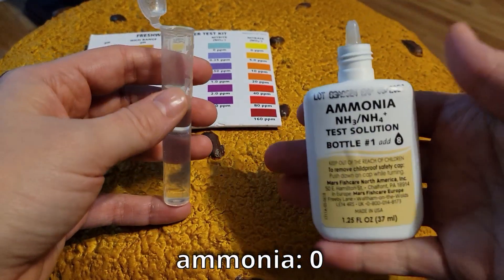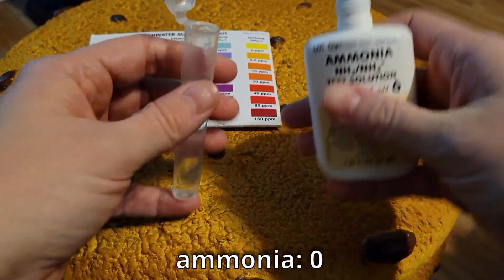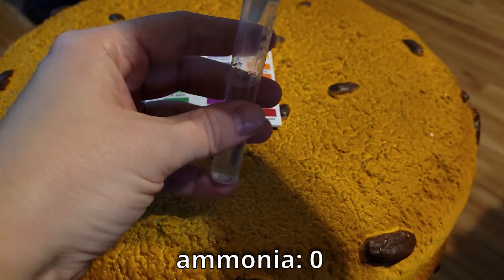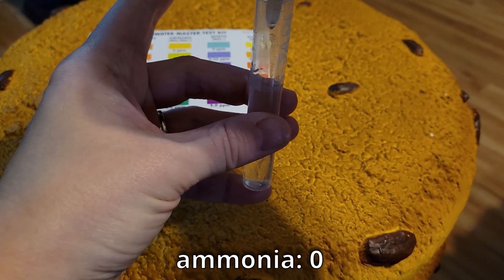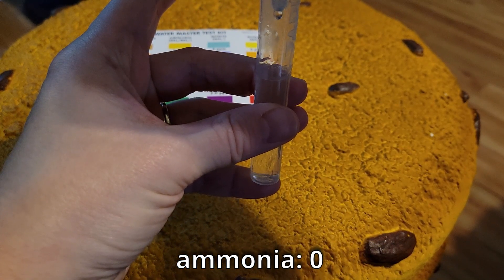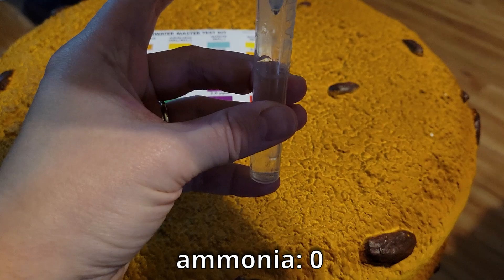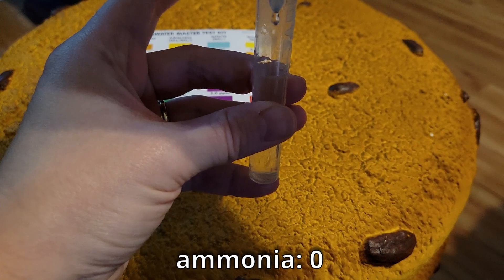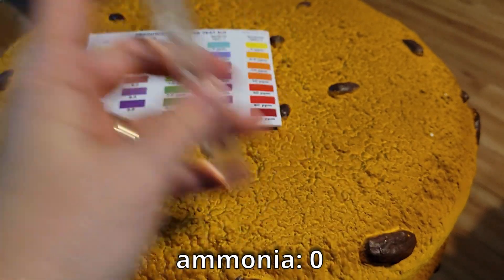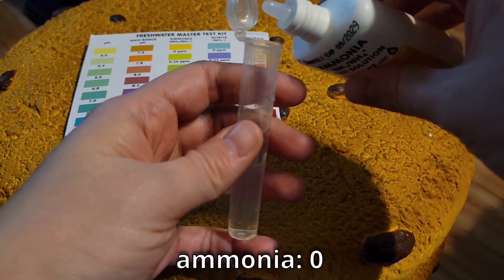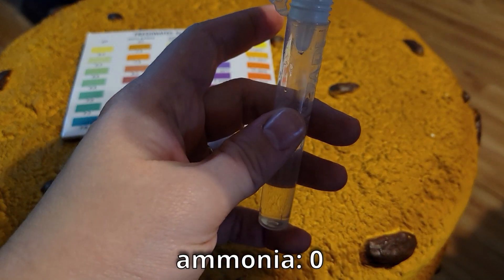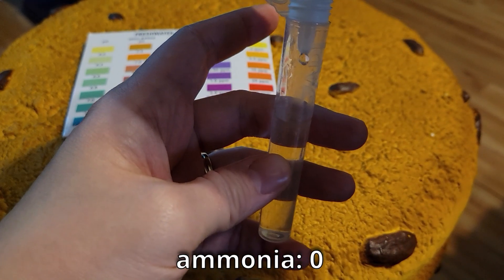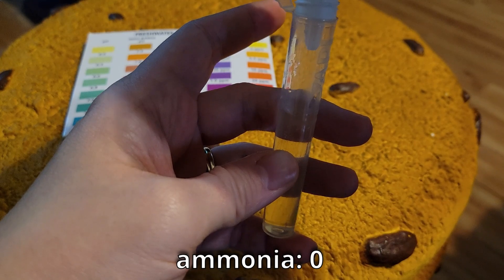Now for the ammonia, you are going to have two bottles. So you're going to put the eight drops from bottle one in the test tube and then shake that up, and then we are going to add eight more drops from bottle two. Shake that up and then you wait five minutes for the test to develop.